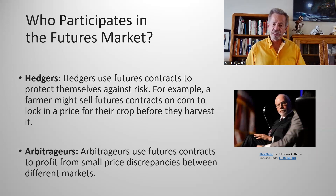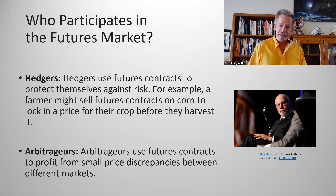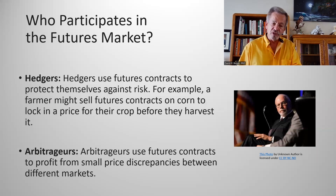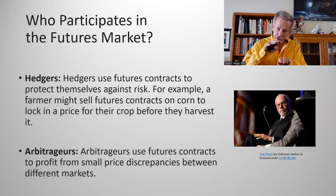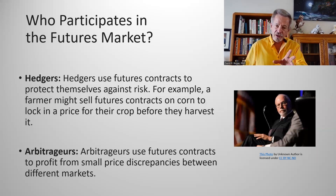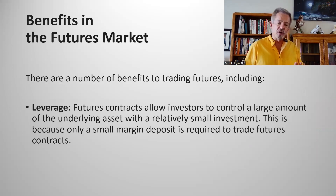For example, a farmer might sell future contracts on corn to lock in a price for their crop before they harvest it. Arbitrators use futures contracts to profit from small price discrepancies between two different markets — they may buy in one market and sell in another to hedge and balance out their portfolio.